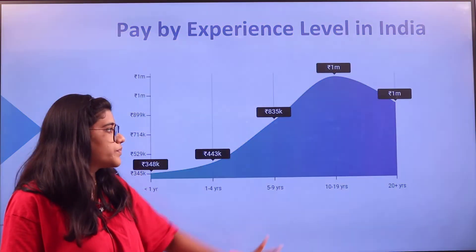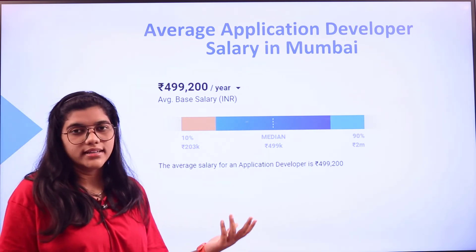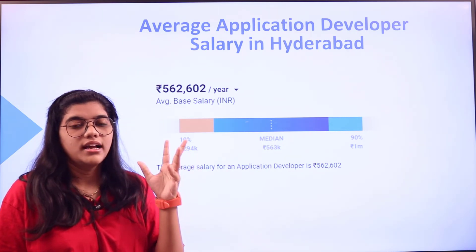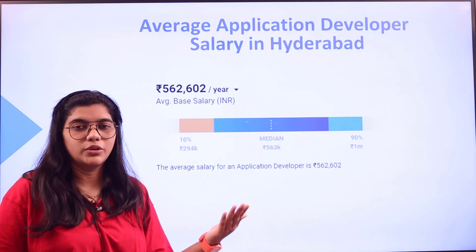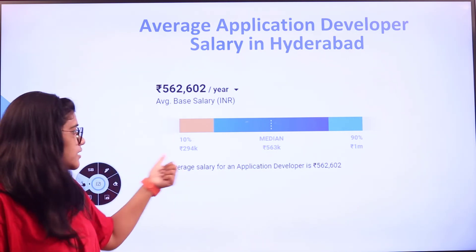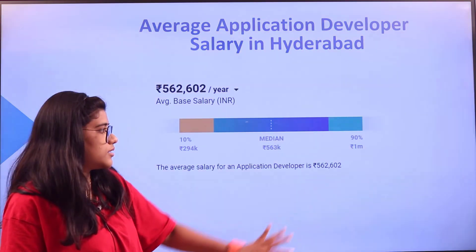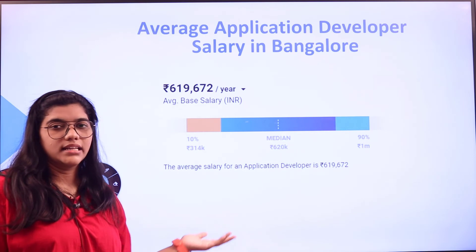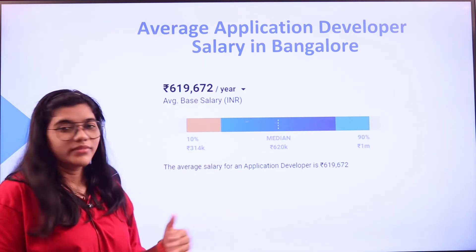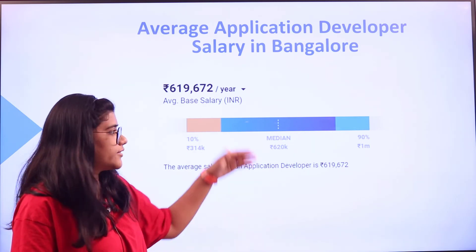In Mumbai, if you are working in that area, you will be getting around 4 lakhs 99 thousand. The bars shown represent entry level, median level, and senior level pay. In Hyderabad, if you are working in a good organization, the starting entry level is around 294K and on a senior average basis you can earn around 5 lakhs 62 thousand. In Bangalore, you can reach up to 6 lakhs 19 thousand — there is very high demand in Bangalore — with entry level starting at around 314K and senior level reaching up to 1 million.